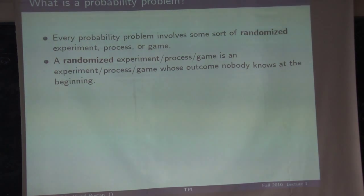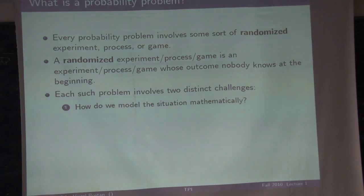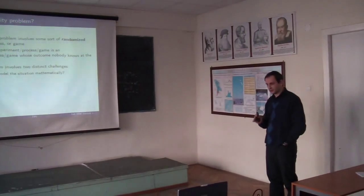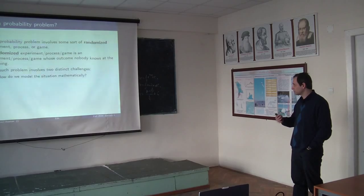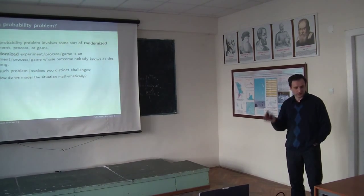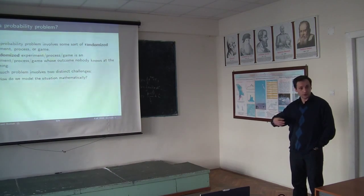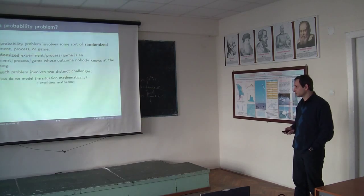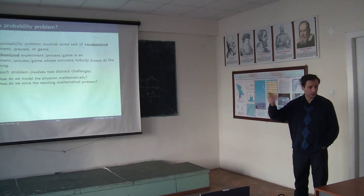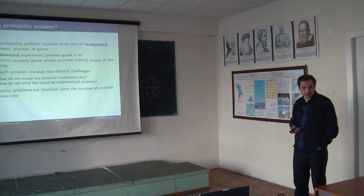Every probability problem is also some sort of randomized experiment. A randomized experiment is a game whose outcome you cannot predict at the beginning. The main idea you need to use every time when trying to solve a probability problem is: first, translate your problem into mathematical language — construct the situation from the point of view of mathematics. After that, solve it as a mathematical problem. The difficult part is the translation, actually.